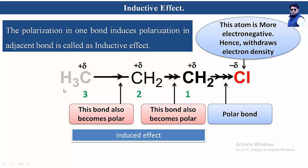Consider the structure of propyl chloride. In propyl chloride, the chlorine atom is more electronegative, so it withdraws electron density from the adjacent carbon atom. The carbon atom gets a partial positive charge while chlorine gets a partial negative charge. This creates a polar bond, and due to polarity in one bond, polarity is generated in adjacent bonds. Such an effect is known as the inductive effect.